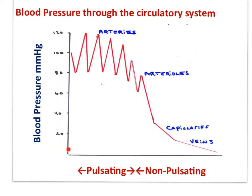This is a graph of blood pressure throughout the circulatory system. Arteries are here and veins here along the x-axis, which represents the entire circuit. You can see that pressure is high in the arteries, pulsing between 120 millimeters of mercury during systole, when the heart is contracted, and 80 millimeters of mercury during diastole, when the heart is at rest. The pressure drops as the blood reaches the capillaries and drops further as blood moves into the veins. The high pressure in the arteries requires thick-walled arteries to withstand the pressure, and the low pressure in the veins requires valves that prevent backflow.